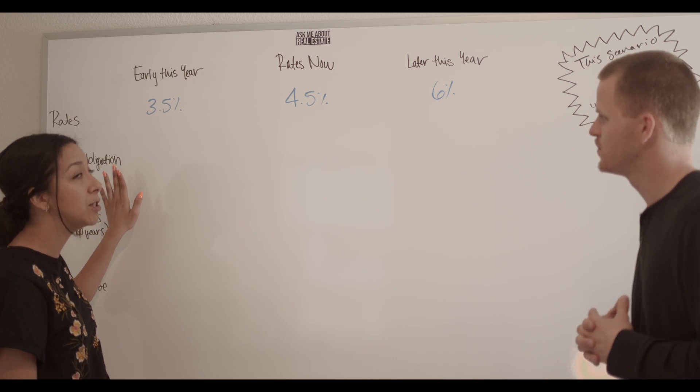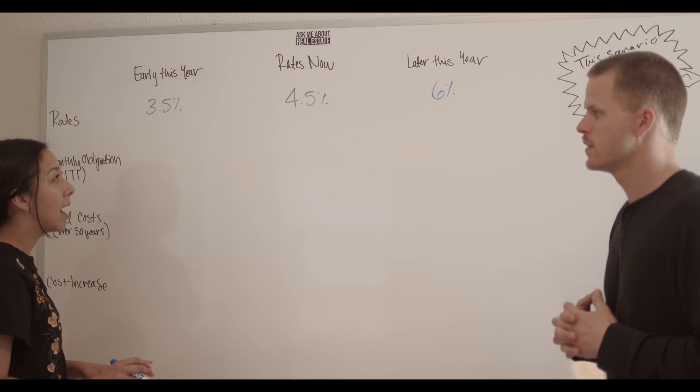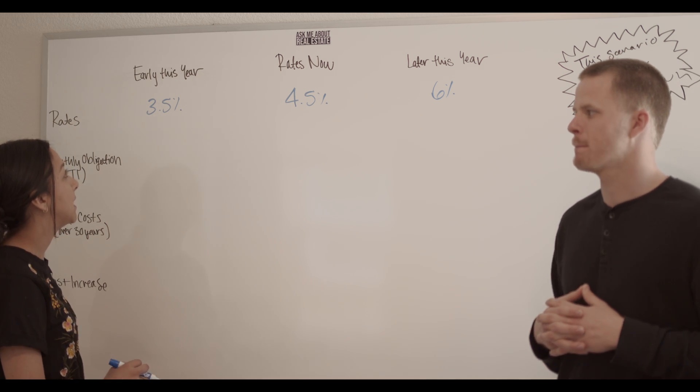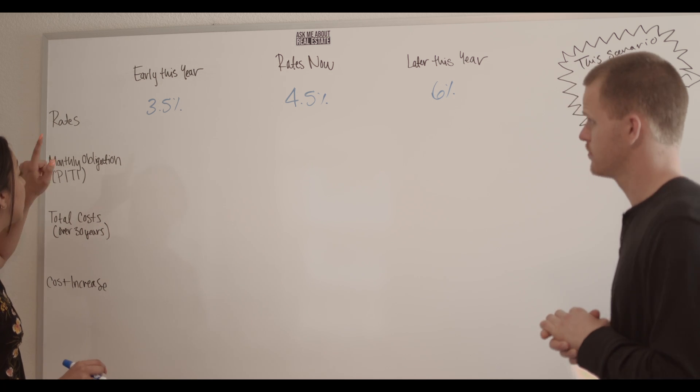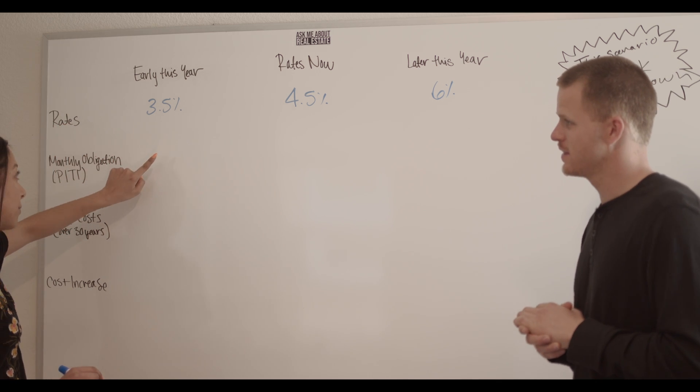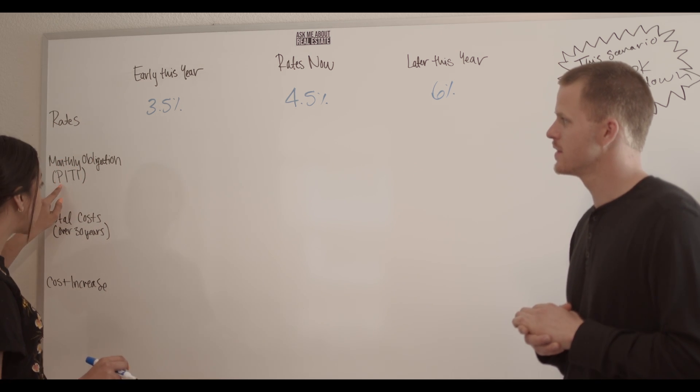We're also going to be just rounding up a little bit just by the dollar so that we can have a better idea and not overwhelm with numbers. So with an interest rate of around 3.5% monthly obligation, which includes the principal, the interest...